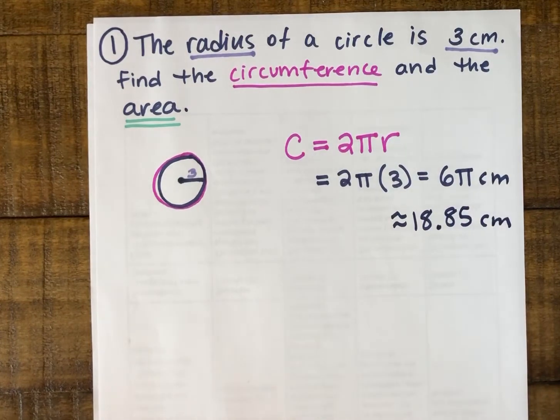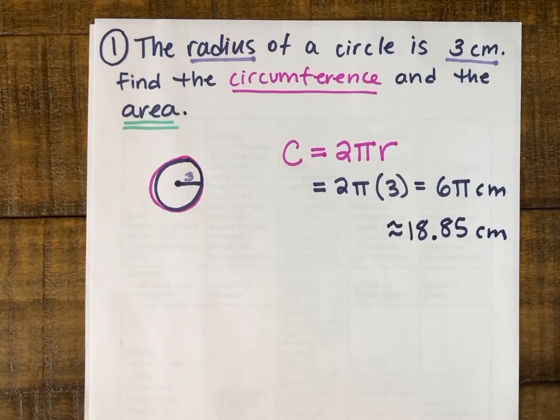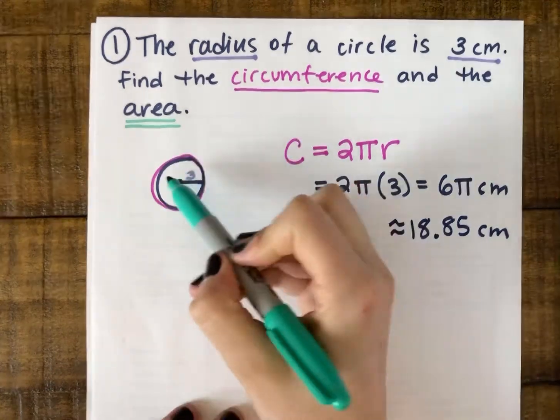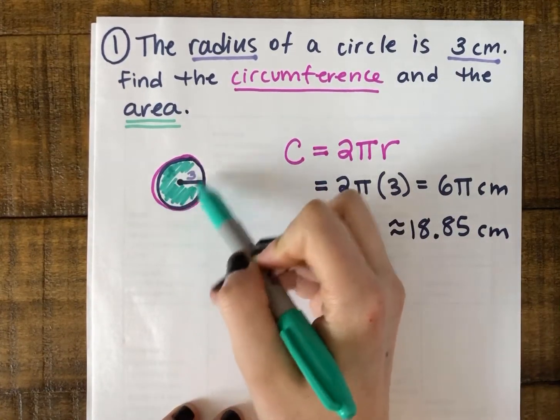So that's the circumference - that's how far around my circle would go. The second thing they asked for in this problem is the area. Area is all that space that our circle takes up on the paper.